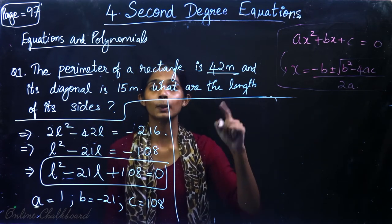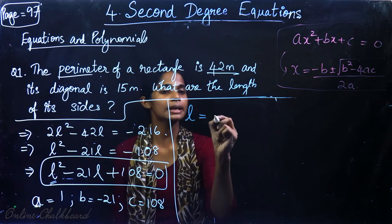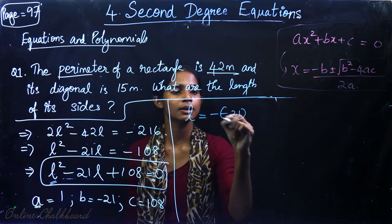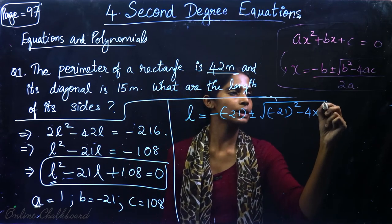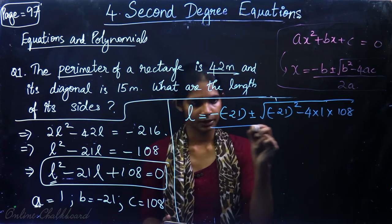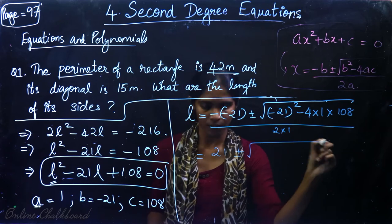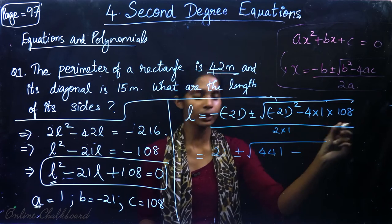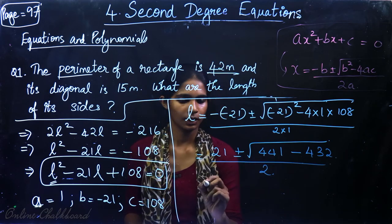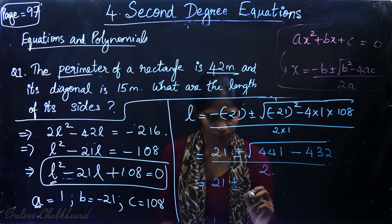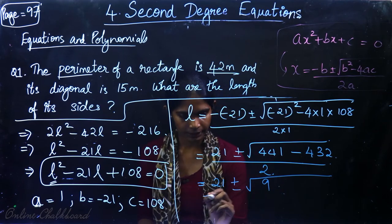Solving using our original formula, the unknown variable is L. So L is equal to minus b, which is minus of minus 21, plus or minus root of b² minus 4ac: that is minus 21 squared minus 4 into 1 into 108, divided by 2a which is 2 into 1. So this is equal to 21 plus or minus root of 441 minus 432, which is root 9 divided by 2.